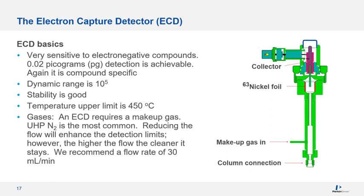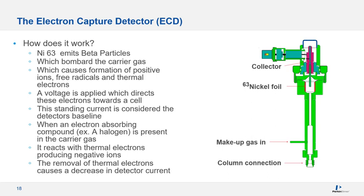How does the electron capture detector work? Radioactive nickel-63 is sealed inside the ECD detector. These radioactive elements emit electrons or beta particles, which form a stable cloud of free electrons in the ECD detector cell and ionize the makeup gas molecules located in the detector. If any electronegative component is present in the carrier gas, the background current is reduced because these components capture the electrons, and this current reduction produces the detector signal.